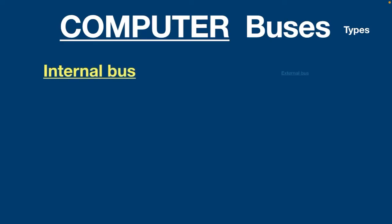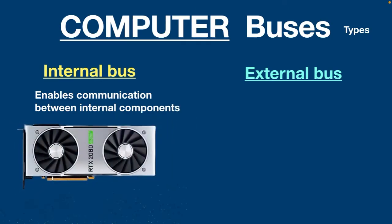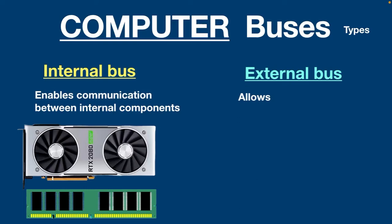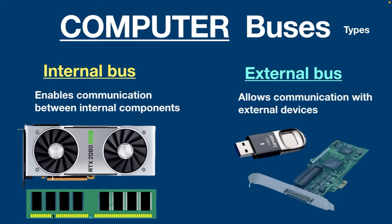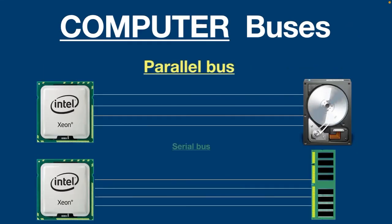Next, we have the internal bus and external bus. The internal bus enables communication between internal components such as the video card or memory. The external bus allows communication with external devices such as USB or SCSI.